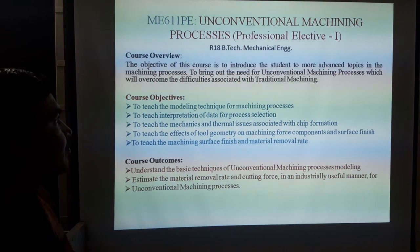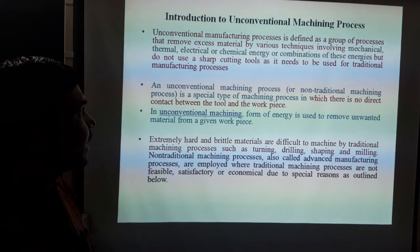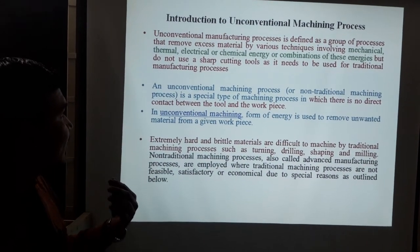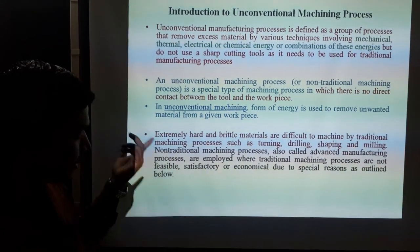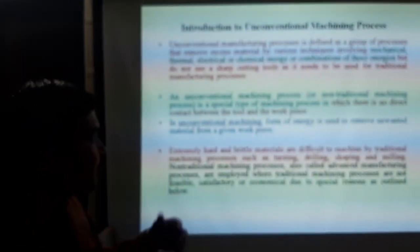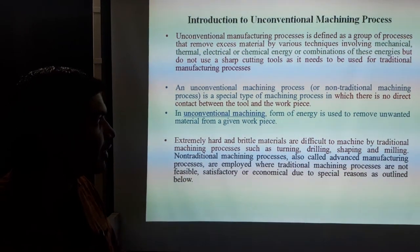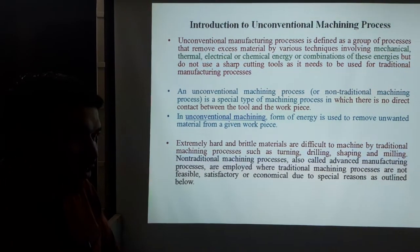Now coming to the introduction of Unconventional Machining Process itself. Unconventional Machining Process is defined as a group of processes to remove excess material by various techniques involving mechanical, thermal, electrical, and chemical energy - or combinations such as mechanical and electrical, or electrical and chemical energy. Importantly, these processes do not use a sharp cutting tool. Traditional machining process uses some energy to remove excess material.